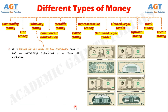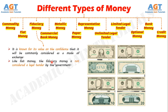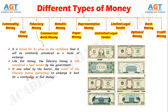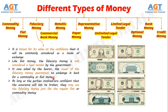Number 3: Fiduciary Money. It is known for its value on the confidence that it will be commonly considered as a mode of exchange. Like fiat money, fiduciary money is not considered a legal tender by the government. In case asked by the bearer, the issuer of the fiduciary money guarantees to exchange it back for a commodity or fiat money. As long as the parties involved are confident that the assurance will not be broken, they may use the fiduciary money just like the regular fiat or commodity money.